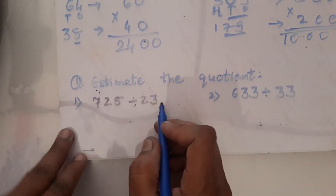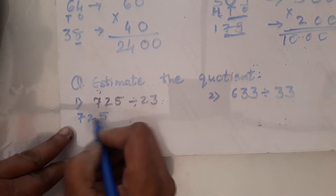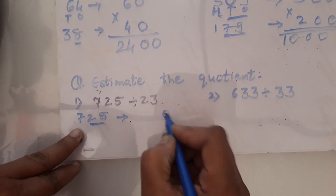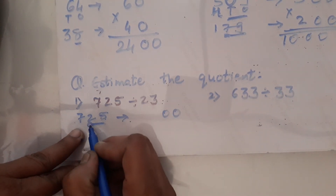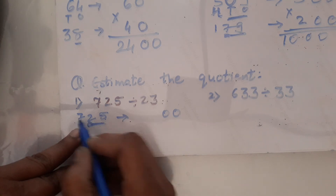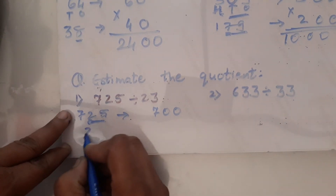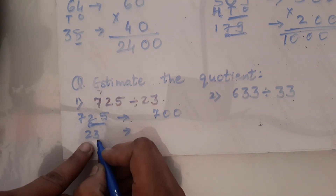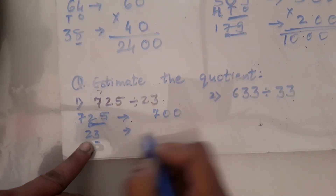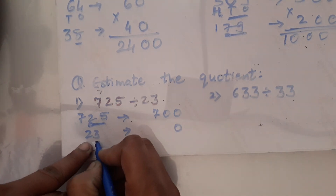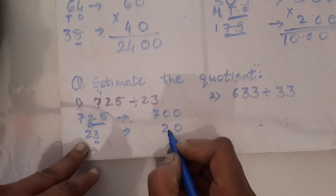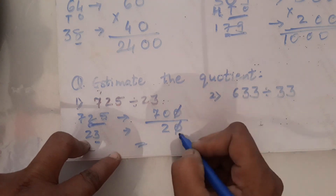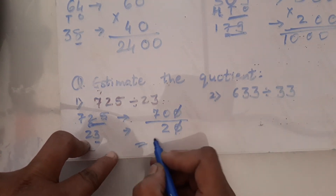For the quotient: 725 is a 3-digit number — round to nearest hundreds: 2 zeros, digit at higher place is 2 — condition not satisfied, so 7 remains as 700. 23 is a 2-digit number — round to nearest tens: condition not satisfied, so 2 remains as 20. Now divide: the zeros cancel, leaving 70 divided by 2, which equals 35.